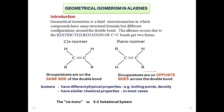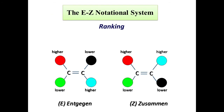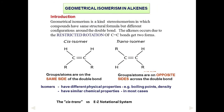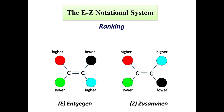Here we discuss cis-trans isomerism versus the E/Z notation system. For example, in a carbon-carbon double bond where hydrogen and hydrogen are on the same side and R groups are on the same side, that is cis isomerism. When the carbon groups are on opposite sides, that is trans isomerism.